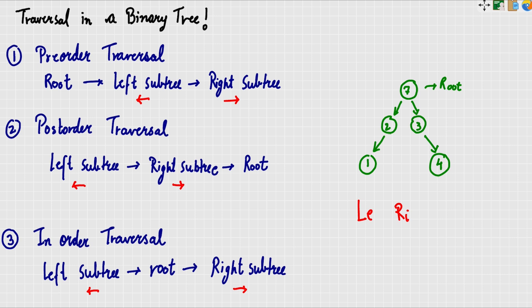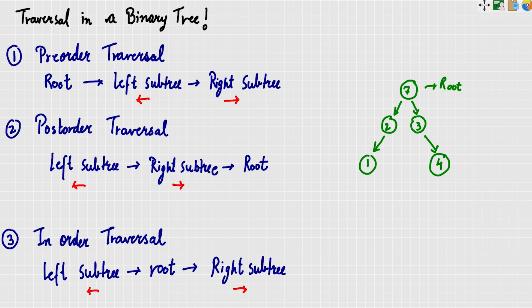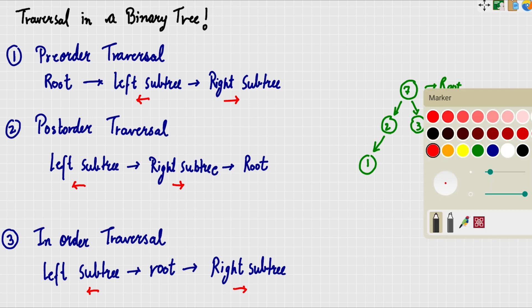For post-order, root is placed at the end: left, right, root. For in-order, root is placed in the middle: left, root, right. These are the three traversals.